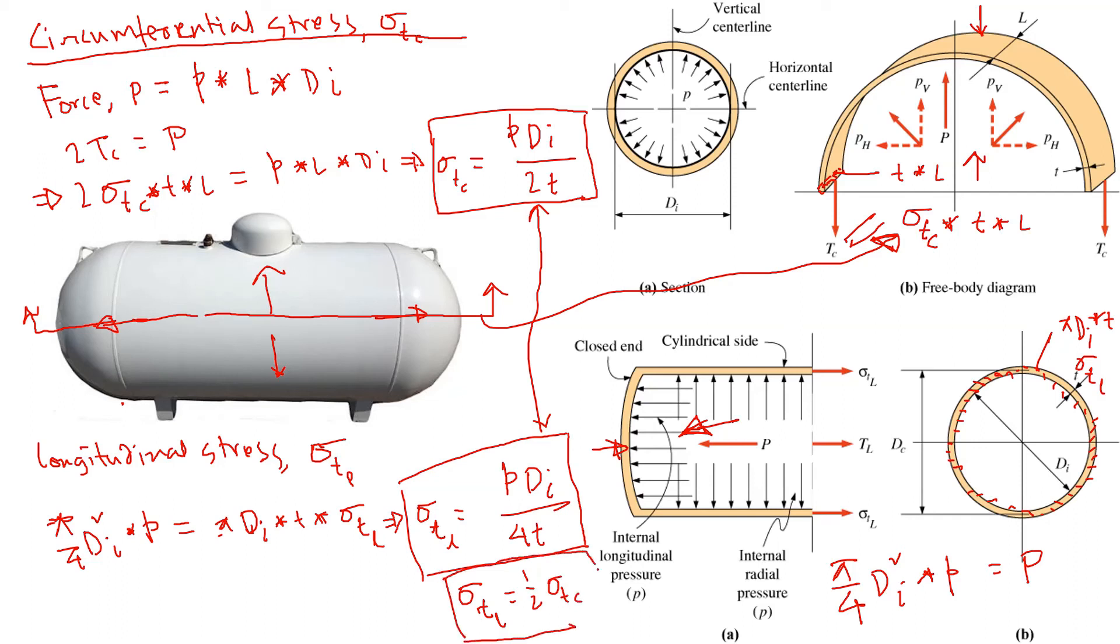In theory, it will never fail longitudinally because it's half of the circumferential. The failure typically will try to separate this tank. If we have a joint here or anything, it will try to separate this way from here. It will fail this way, assuming this weld is well done and strong enough. There is the longitudinal stress and circumferential stress in a gas tank.